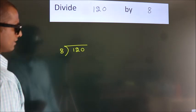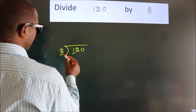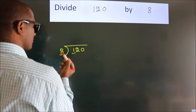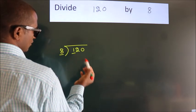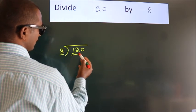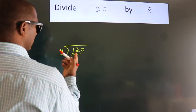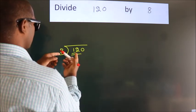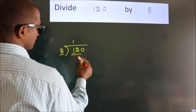Next. Here we have 1, here 8. 1 is smaller than 8, so we should take 2 numbers: 12. A number close to 12 in the 8 table is 8 once 8.